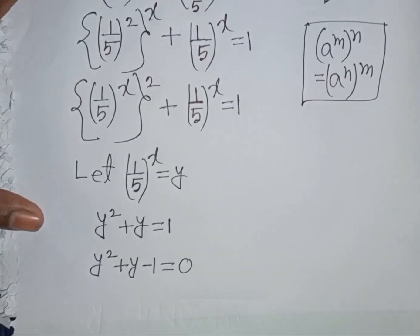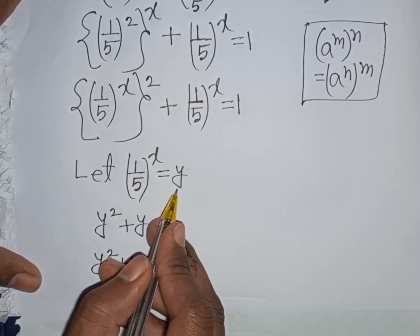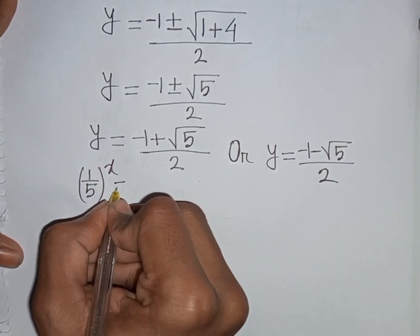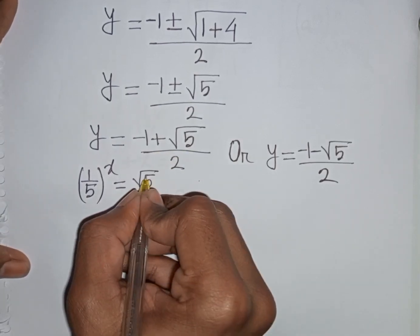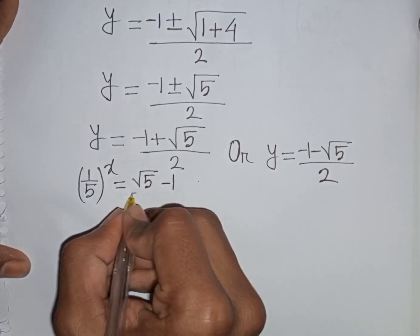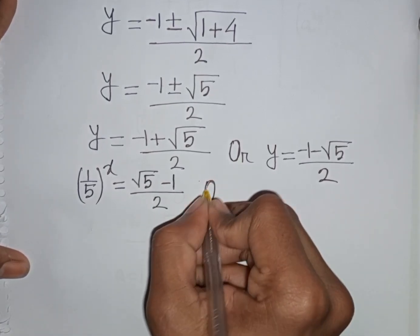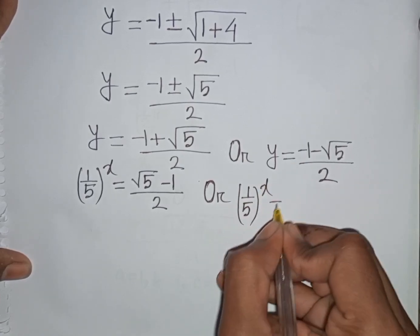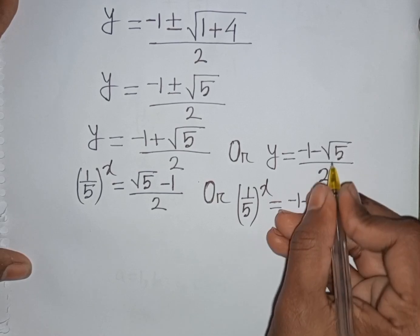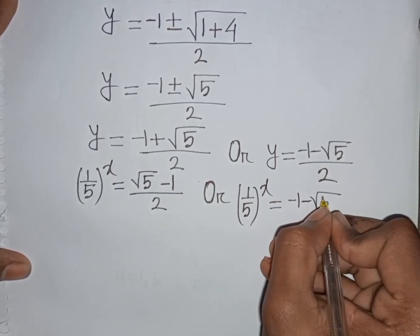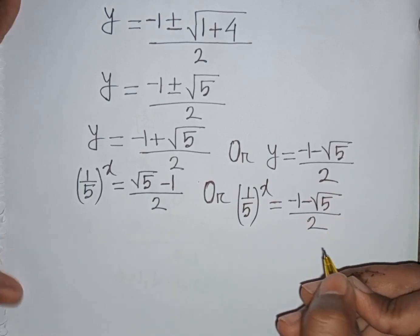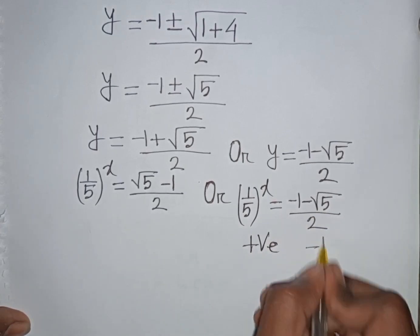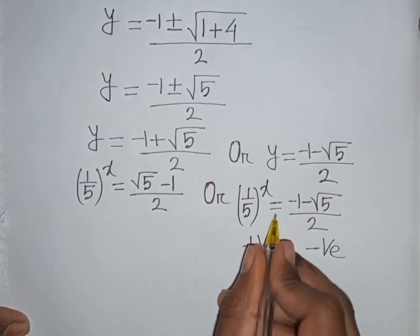Recall that y = (1/5)^x. So either (1/5)^x equals (square root of 5 minus 1) / 2, or (1/5)^x equals (minus 1 minus square root of 5) / 2. The second solution is negative, but (1/5)^x is always positive, so a positive value cannot equal a negative value. This solution is rejected.